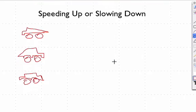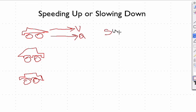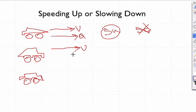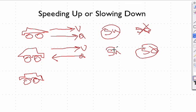Let's look at some visual examples. A car is traveling to the right — its velocity vector points right — and it's also being accelerated in that same direction. Both pointing the same way, so it's speeding up. Next example: the car is going in the same direction, but now being accelerated in the opposite direction. Velocity and acceleration are opposite, so the answer is slowing down. Third example: the car is moving in the same direction, but acceleration is zero meters per second squared — so velocity is constant.